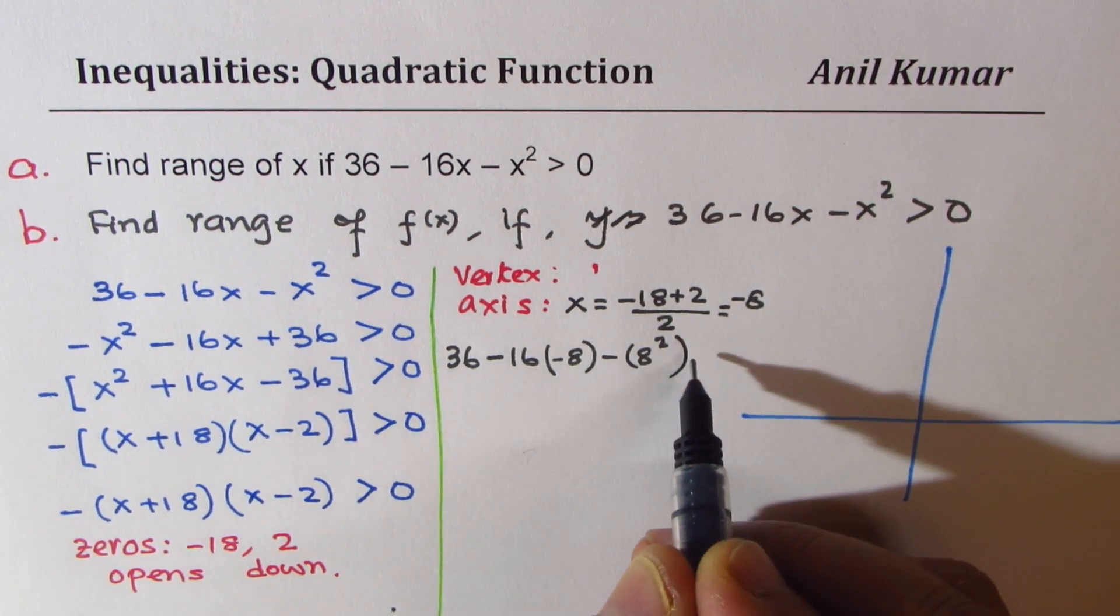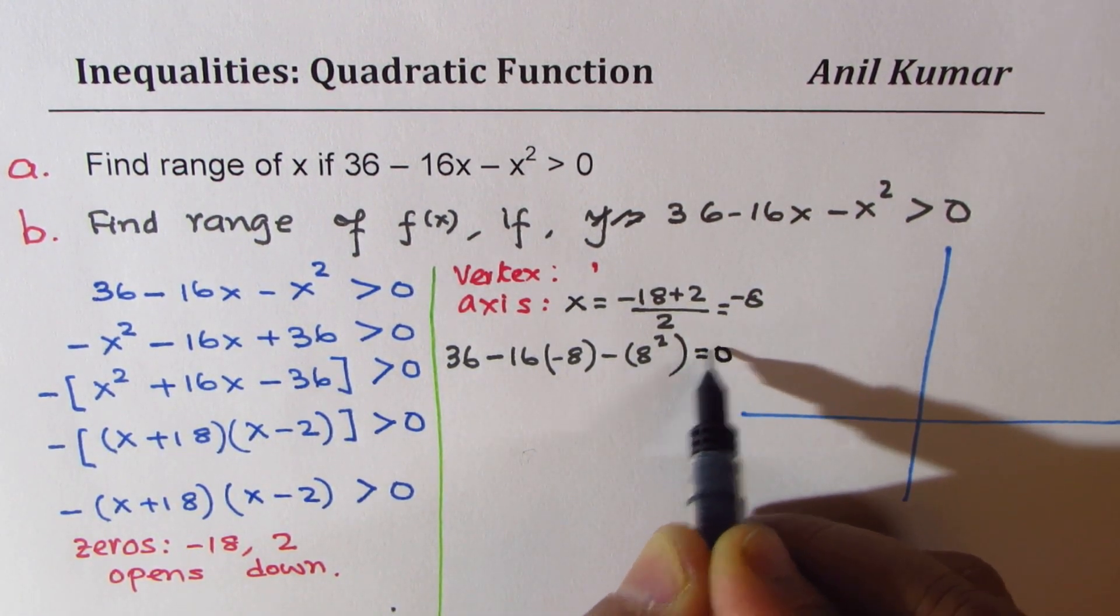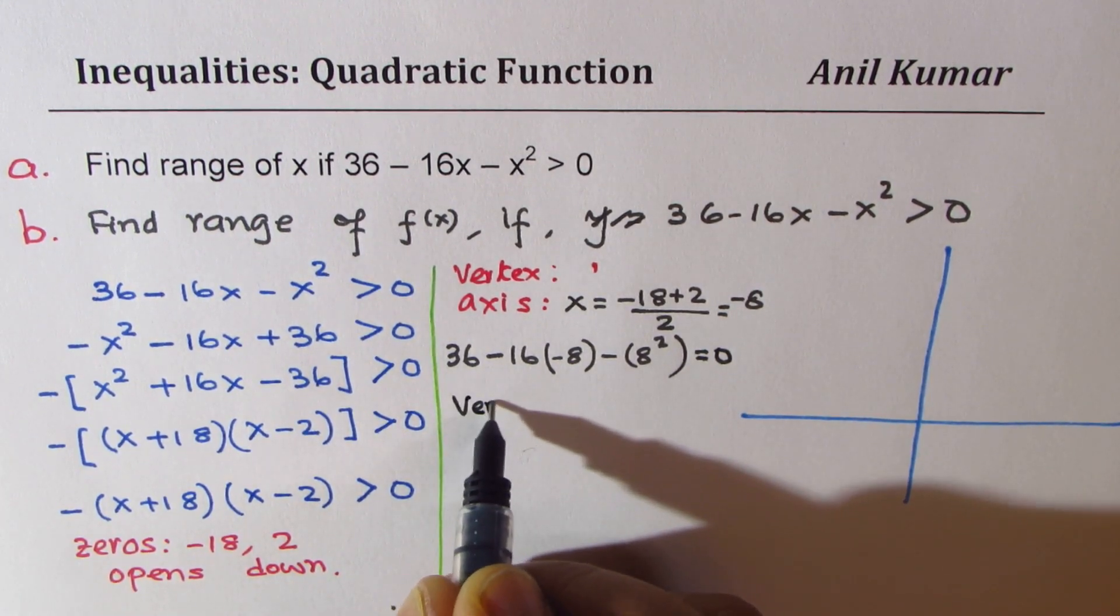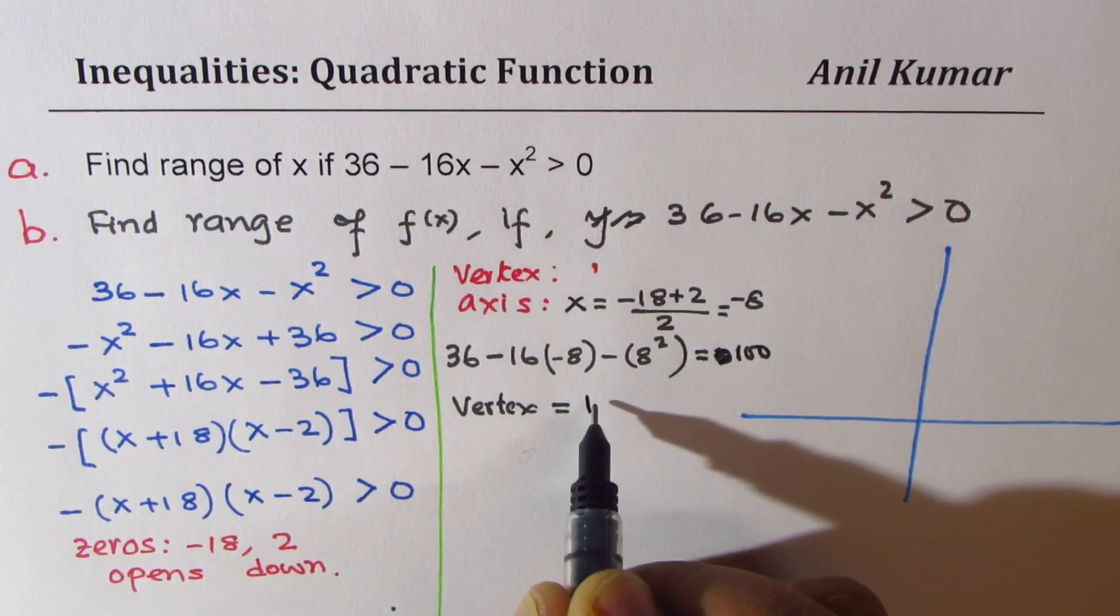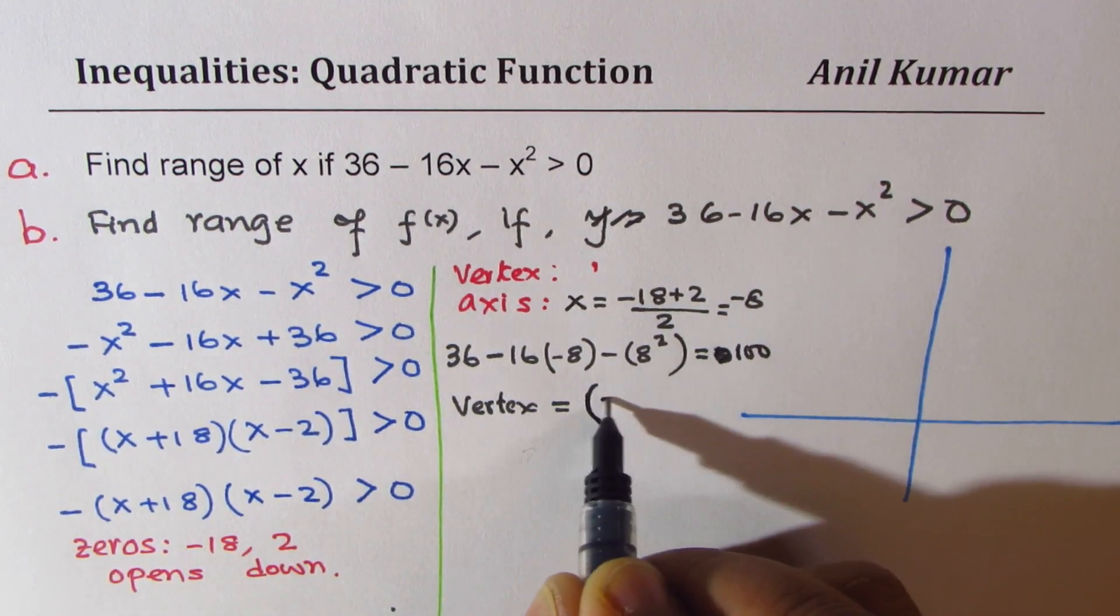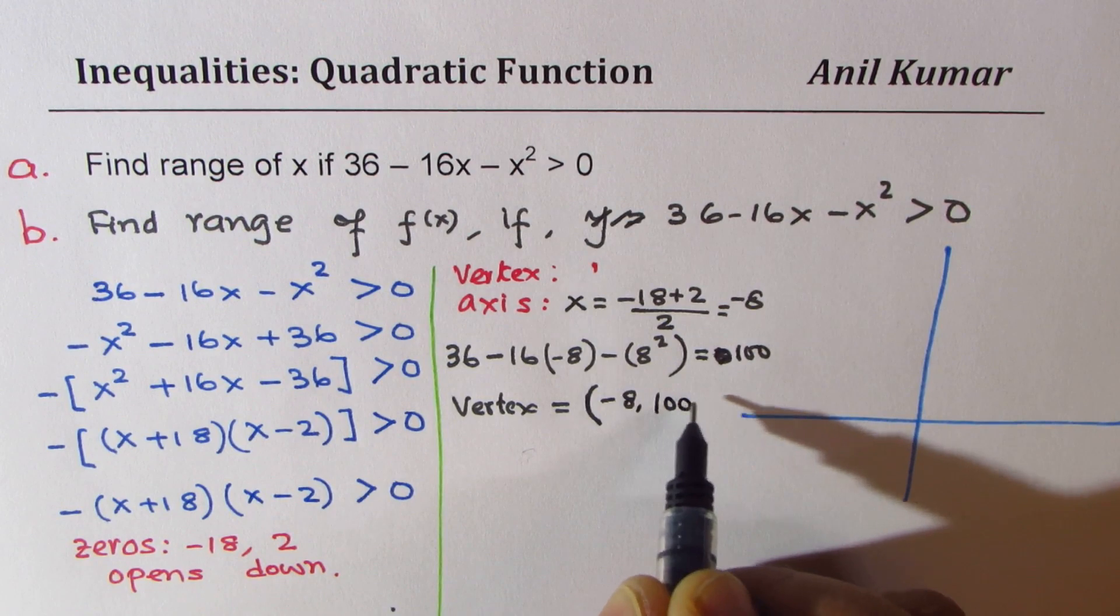We have 36 plus 16 times 8 minus 64 equals to 100. So we get this value equal to 100. And therefore, the vertex is at minus 8, 100. X value of minus 8, y value of 100.